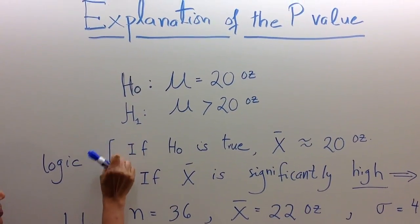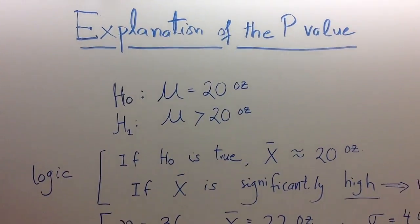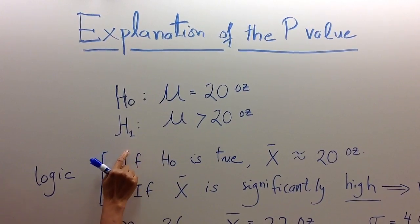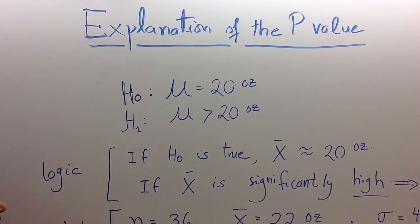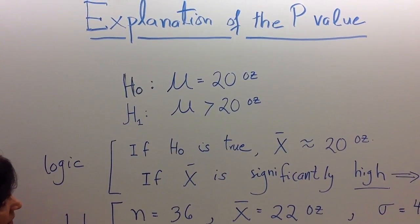Another statement, which is called the alternative hypothesis and denoted by H₁, is that perhaps a company believes that the mean has changed, and it is now more than 20 ounces.